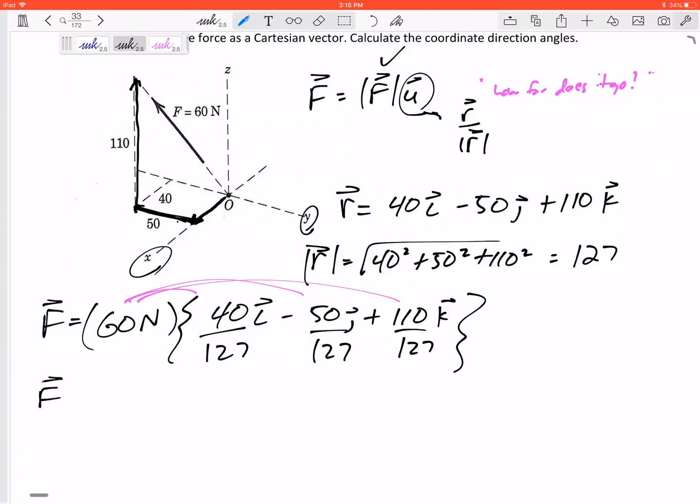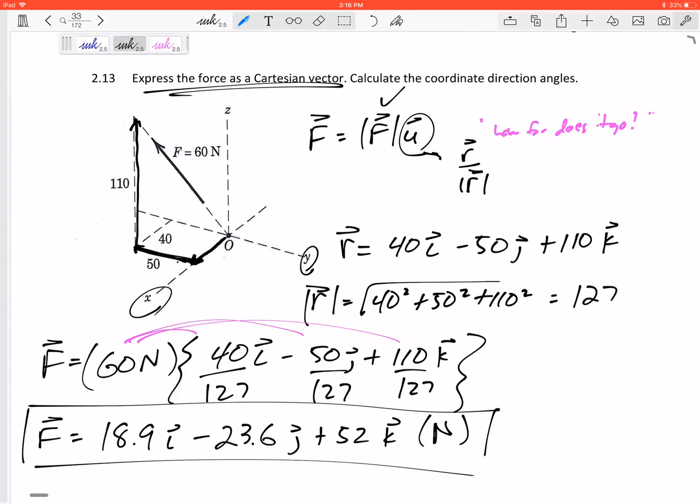And then I just want to multiply this through. F is equal to 60 times 40 divided by 127, which would be 18.9 in the I, minus 23.6 in the J, plus 52 in the K. Units are Newtons.